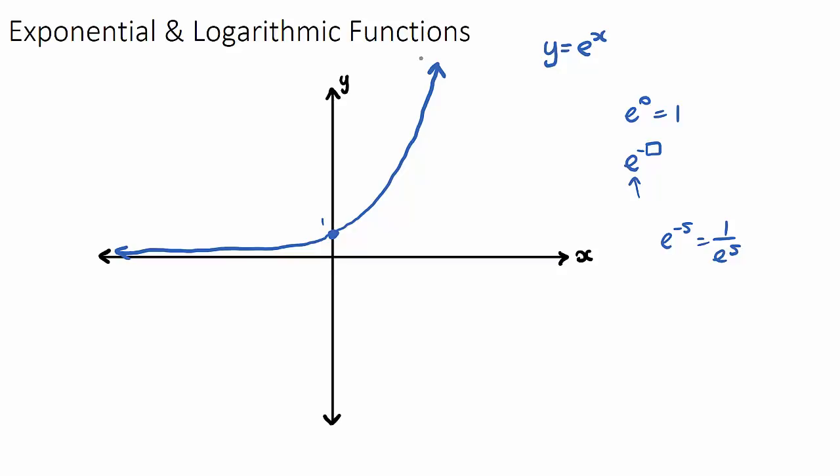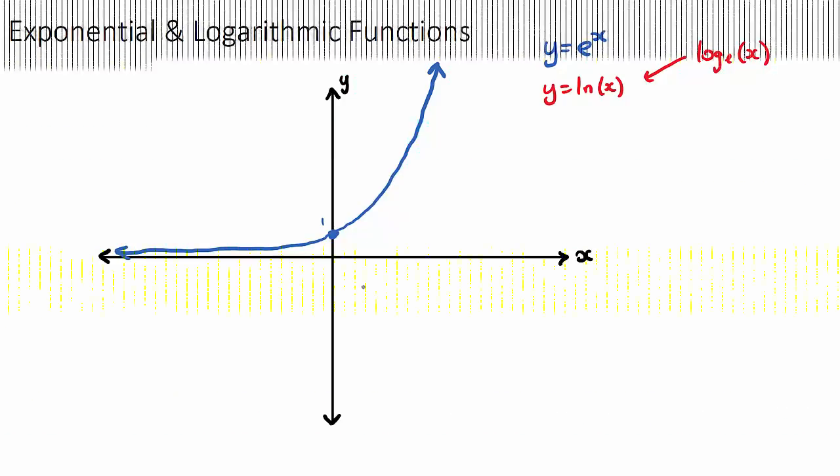So that's what a basic exponential function looks like. And the most basic logarithmic function, I'll draw this one in red, would be y equals ln x, the natural log. This is the same as log base e of x. Hopefully we have seen what a log is, a logarithm, and we have a base and we have a term.